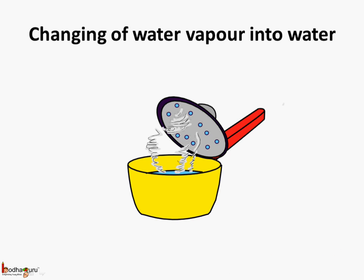When water vapor changes back to water due to cooling, it is called condensation. So, remember children, condensation is the process by which water vapor changes into water on cooling.